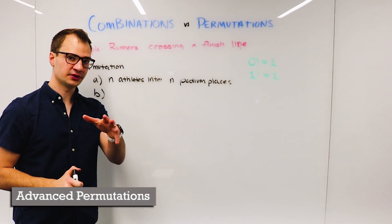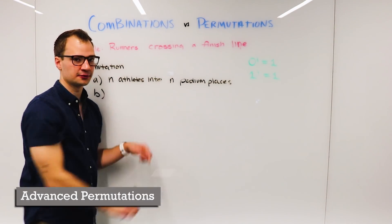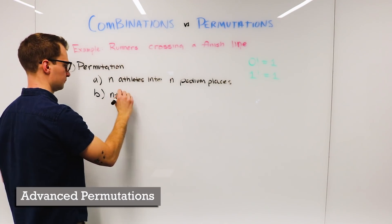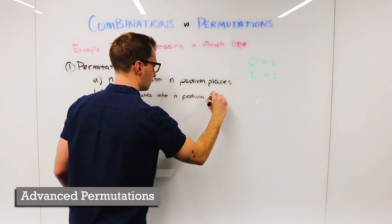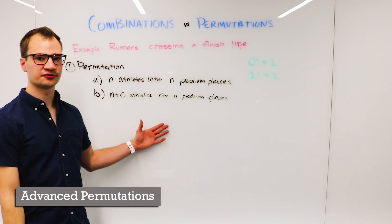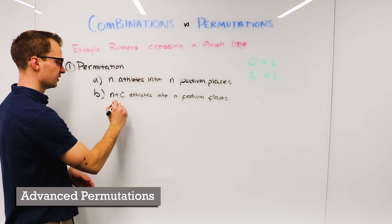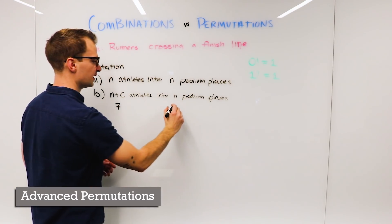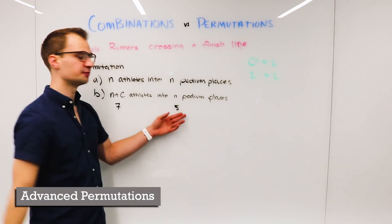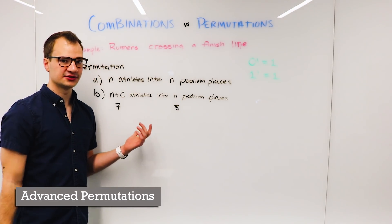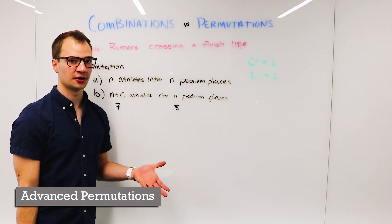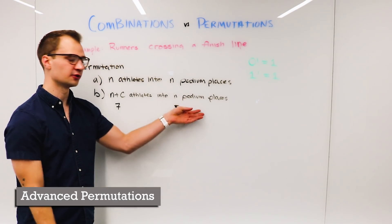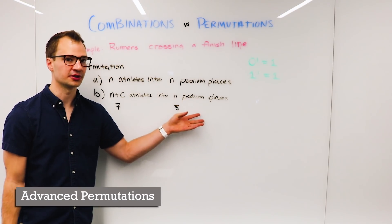Now we're going to be looking at a situation in which these are not equal. A more common example for athletes would be if we have, let's say, seven athletes and there's only five podium positions. The last two athletes we don't really care about the order that they come in because we only care about the podium placers.